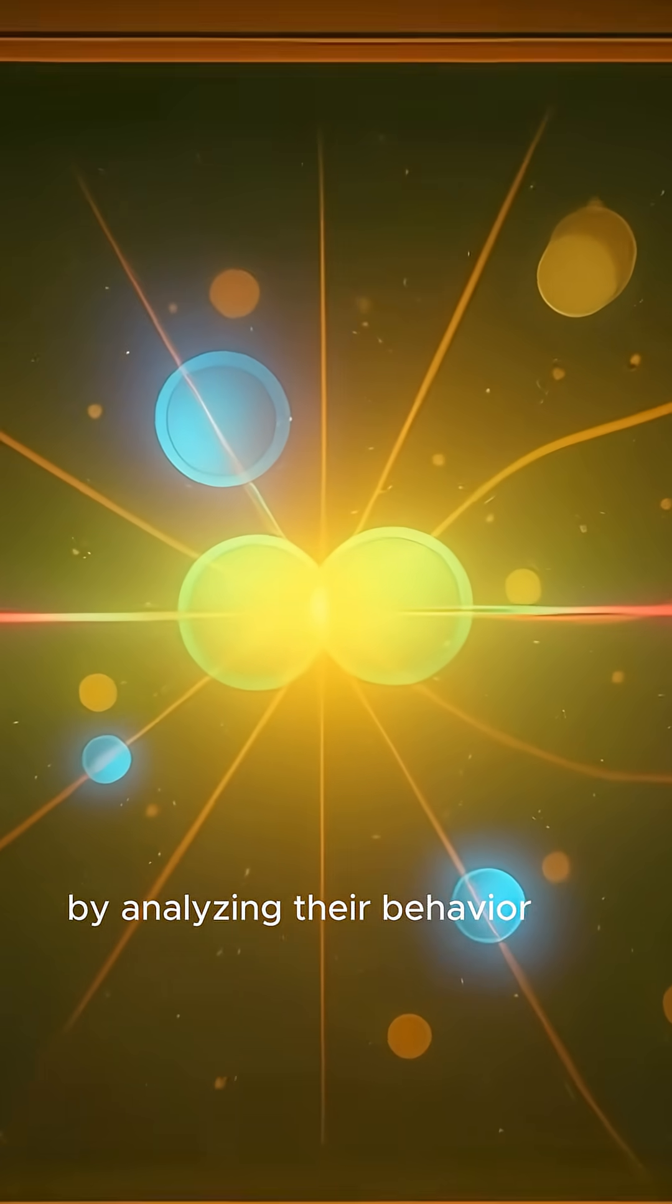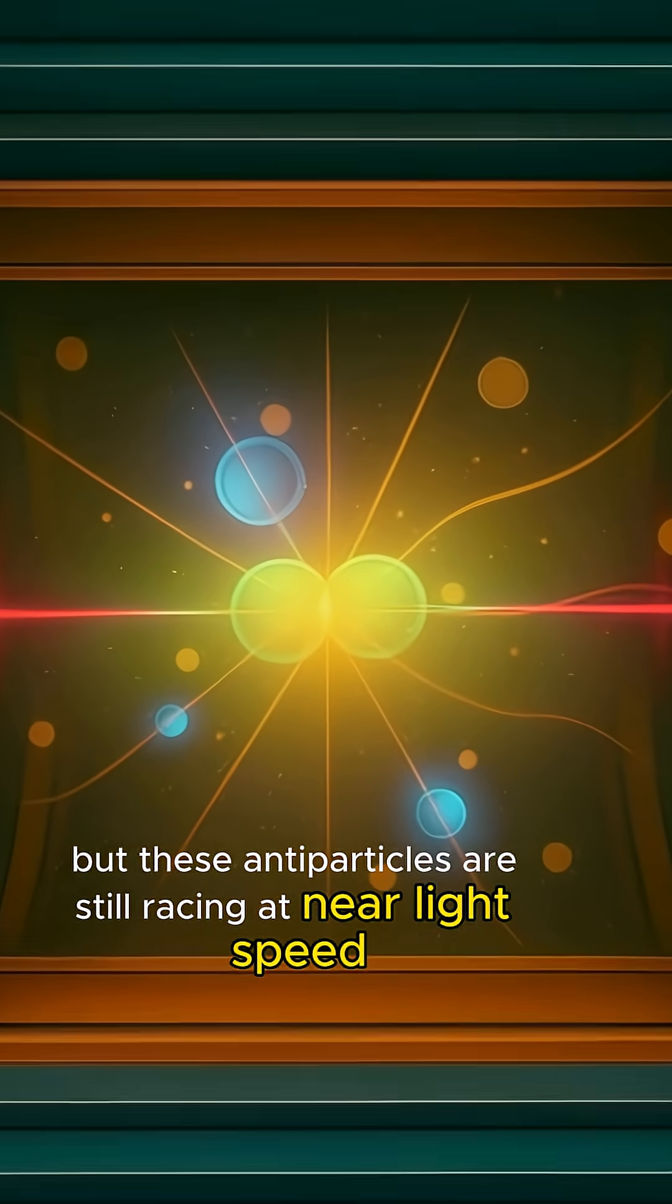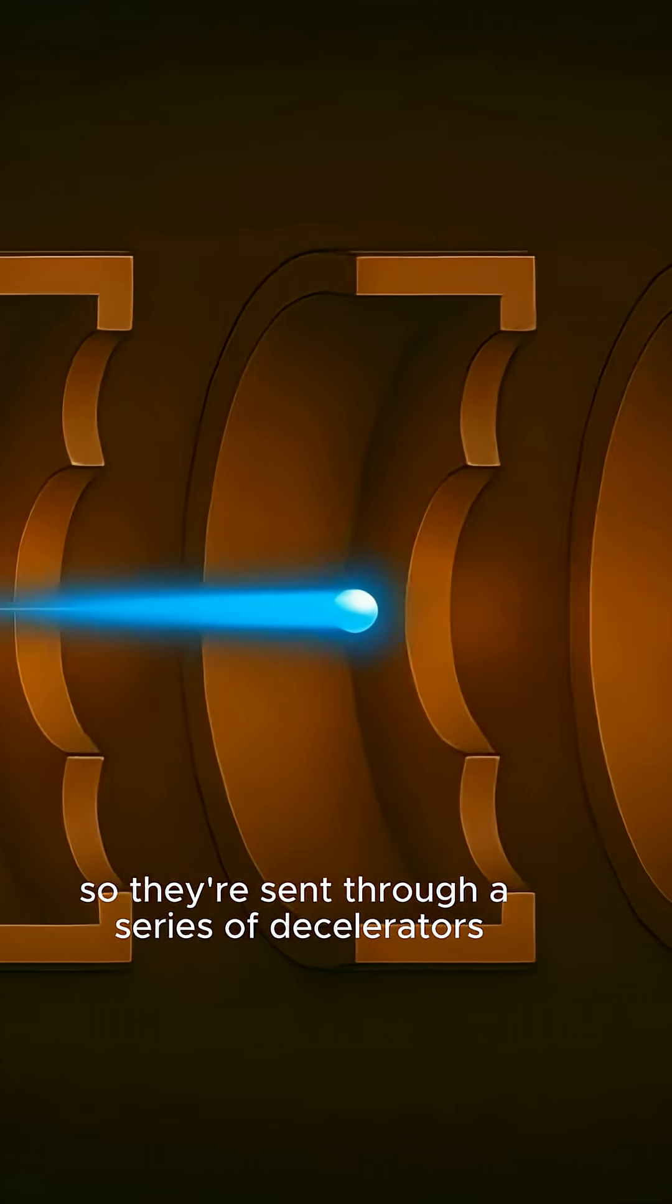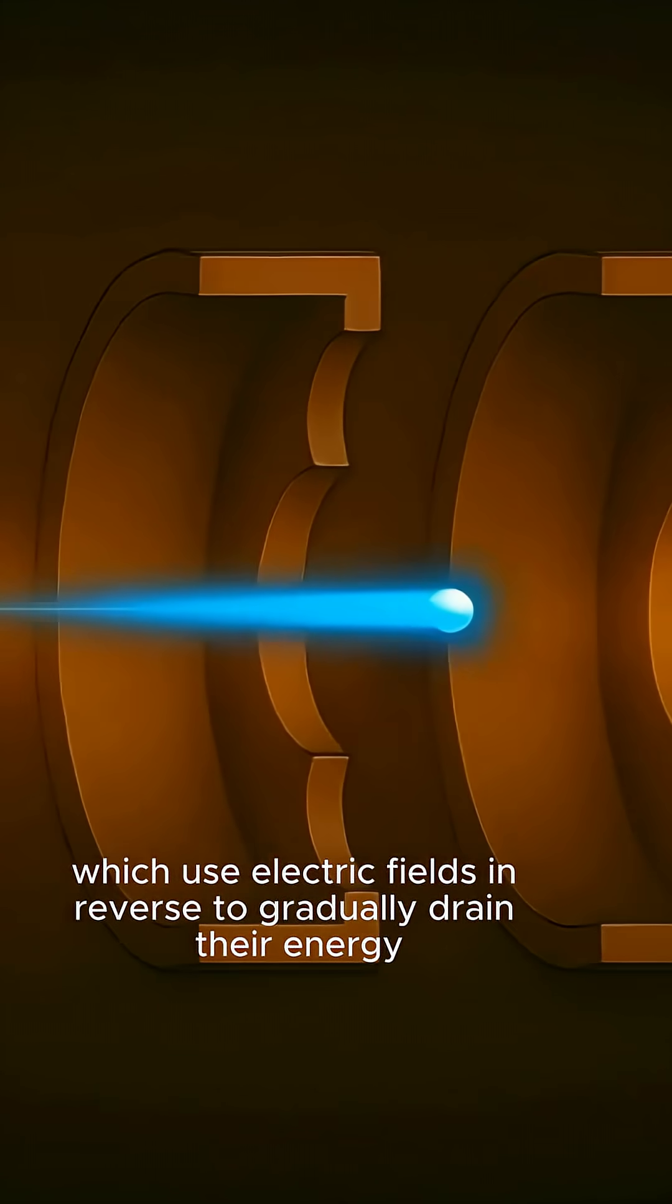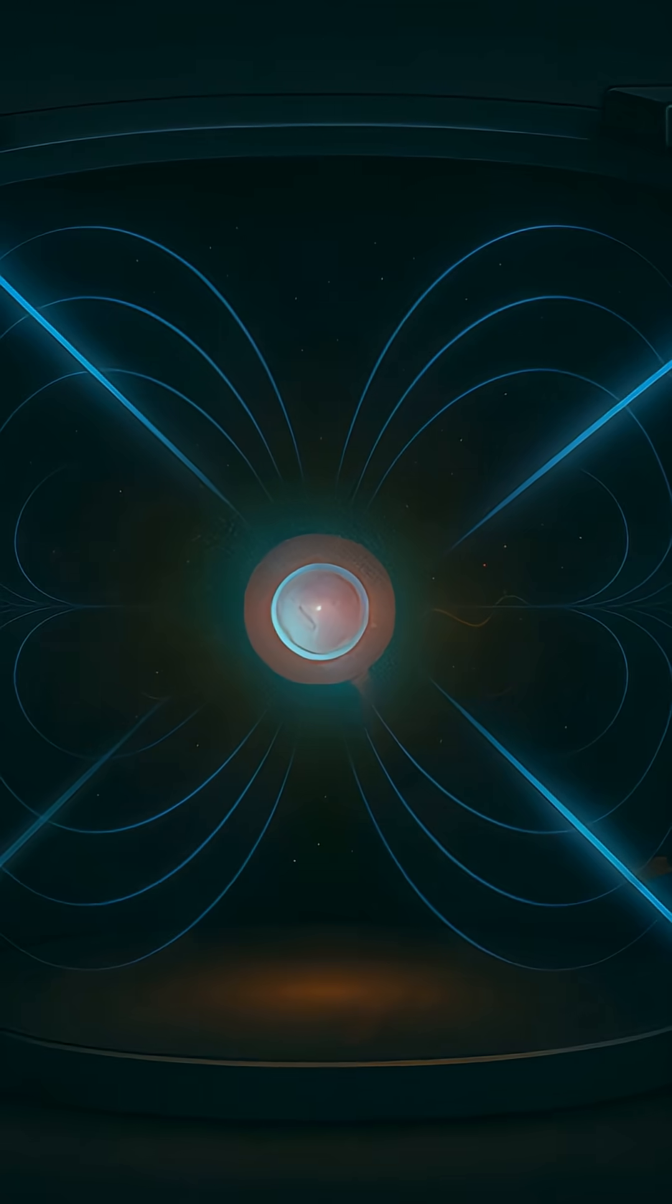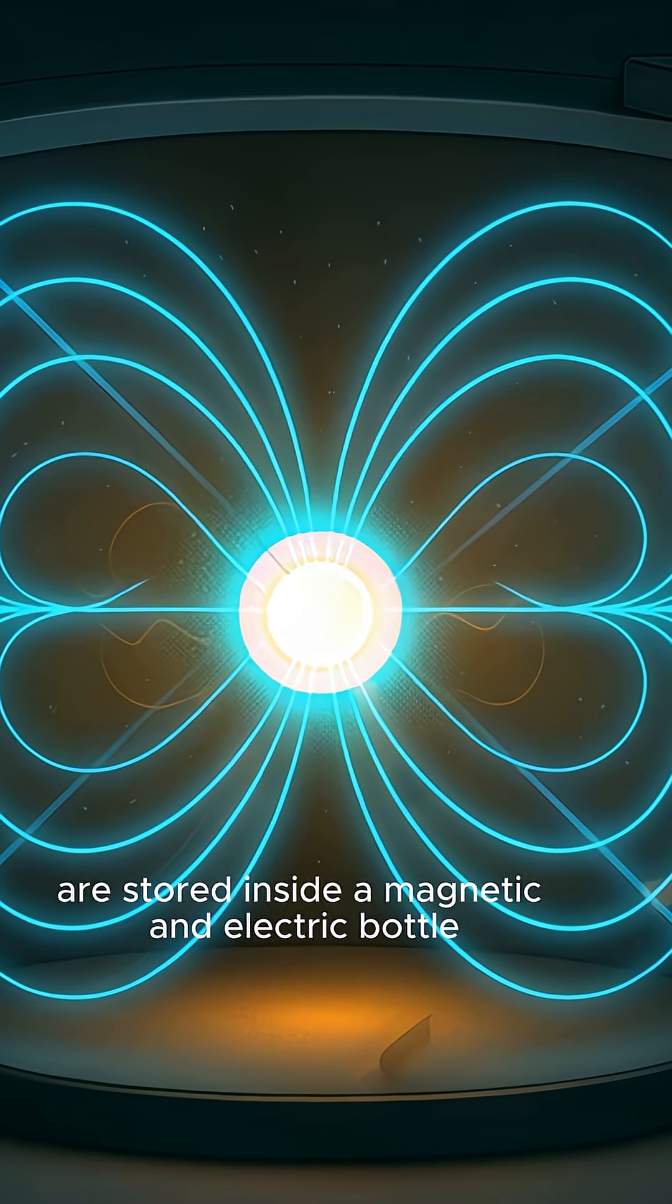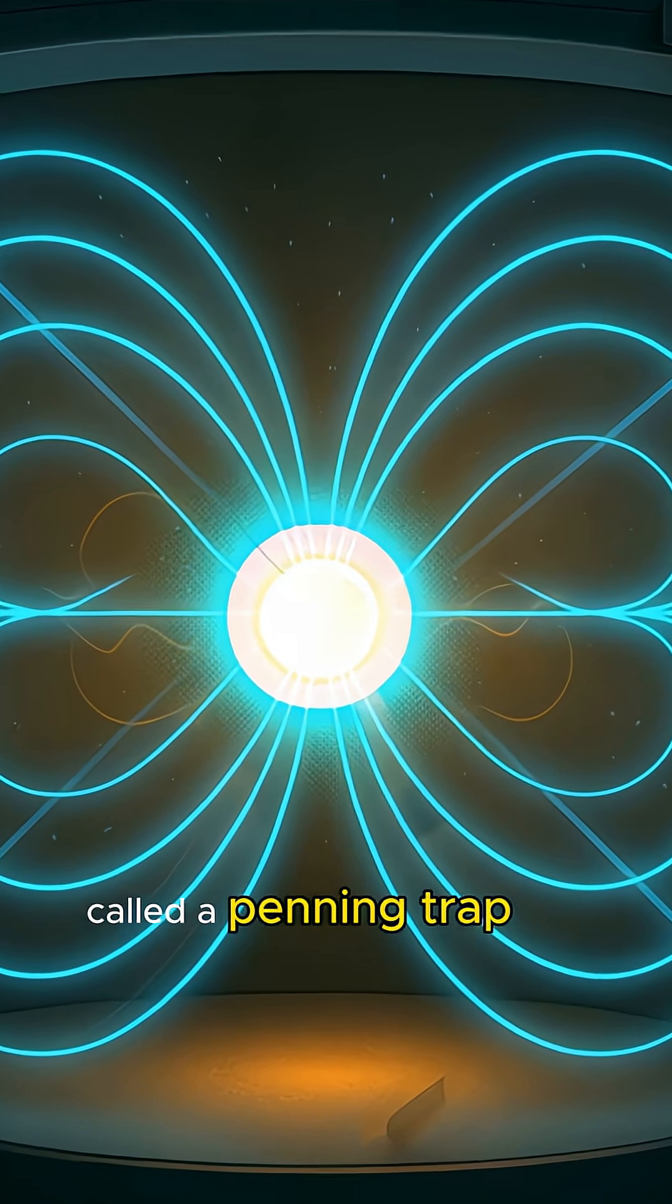Finally, scientists must find the antiparticles among the debris by analyzing their behavior. But these antiparticles are still racing at near light speed. So they're sent through a series of decelerators, which use electric fields in reverse to gradually drain their energy. Now the slowed antiparticles are stored inside a magnetic and electric bottle, called a penning trap.